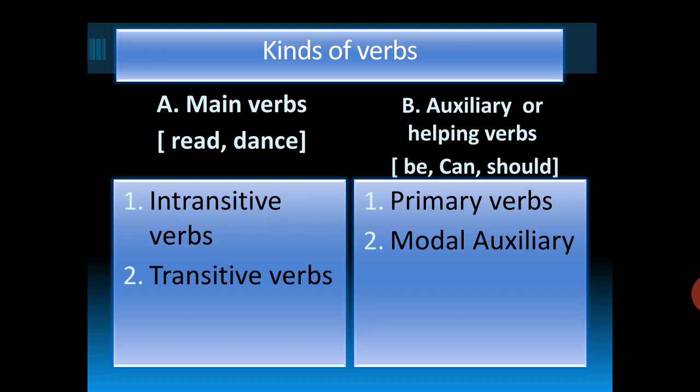Now, if I talk about the kinds of verbs, there are two basic main divisions. One is main verbs and second is the auxiliary or the helping verbs. Main verbs are all those actions which we can see — like read, dance, cook, sleep, eat. Auxiliary verbs are helping verbs; they support the main verb. When we need some helping verbs in the present continuous tenses or in present perfect tenses, they are called as auxiliary or helping verbs. Main verbs are of two kinds — intransitive verbs and transitive verbs. Whereas auxiliary verbs are also of two kinds — primary verbs and modal auxiliary.